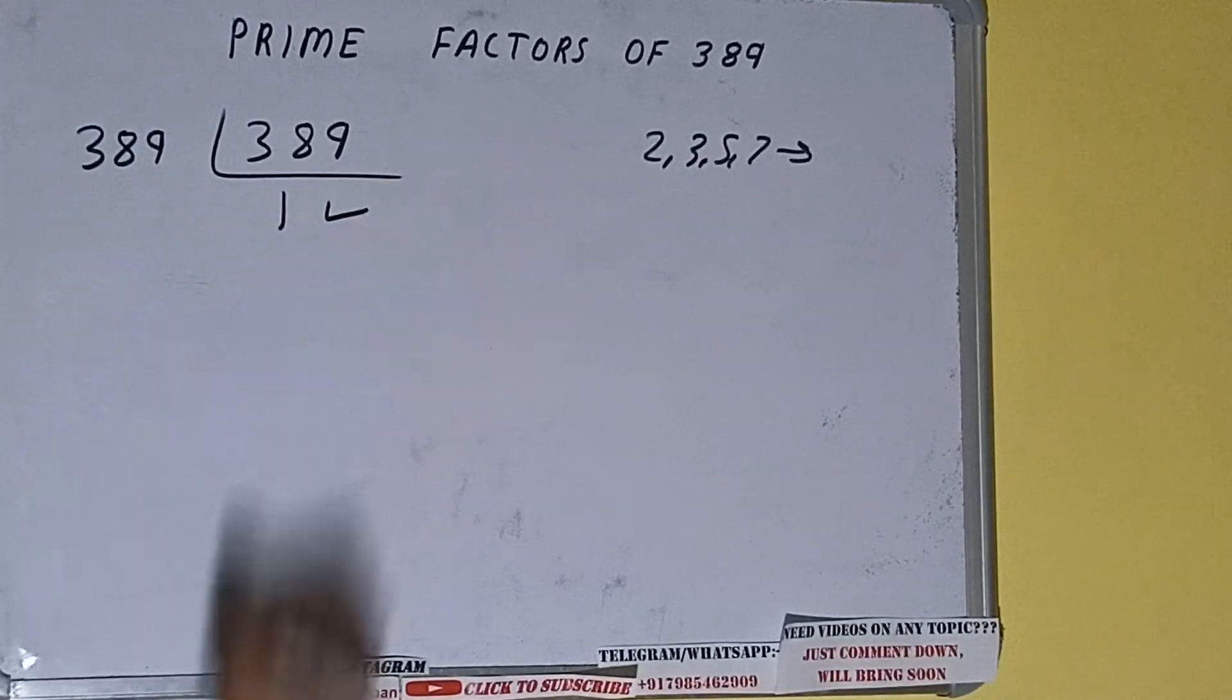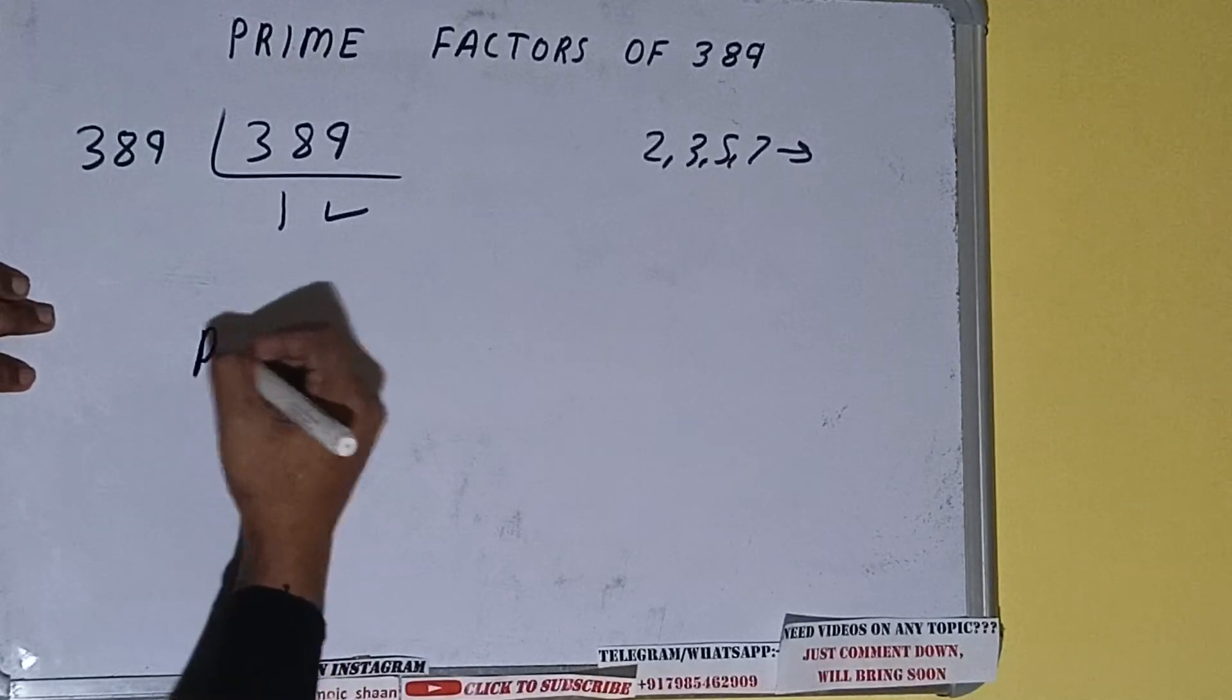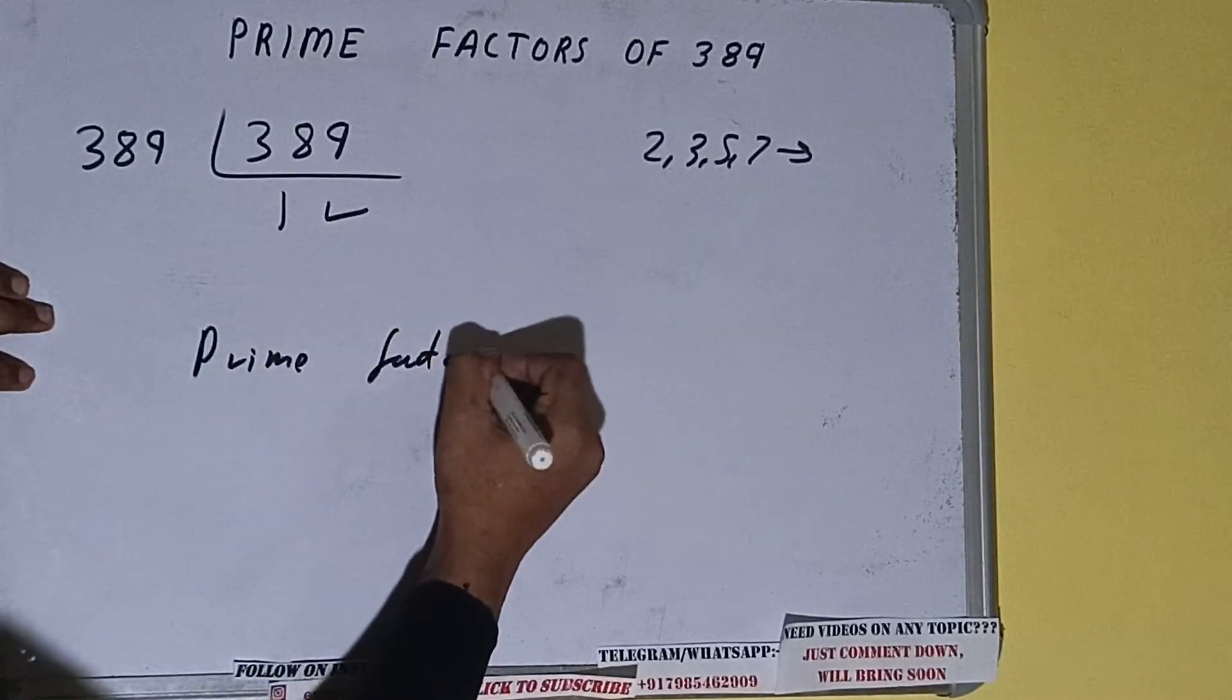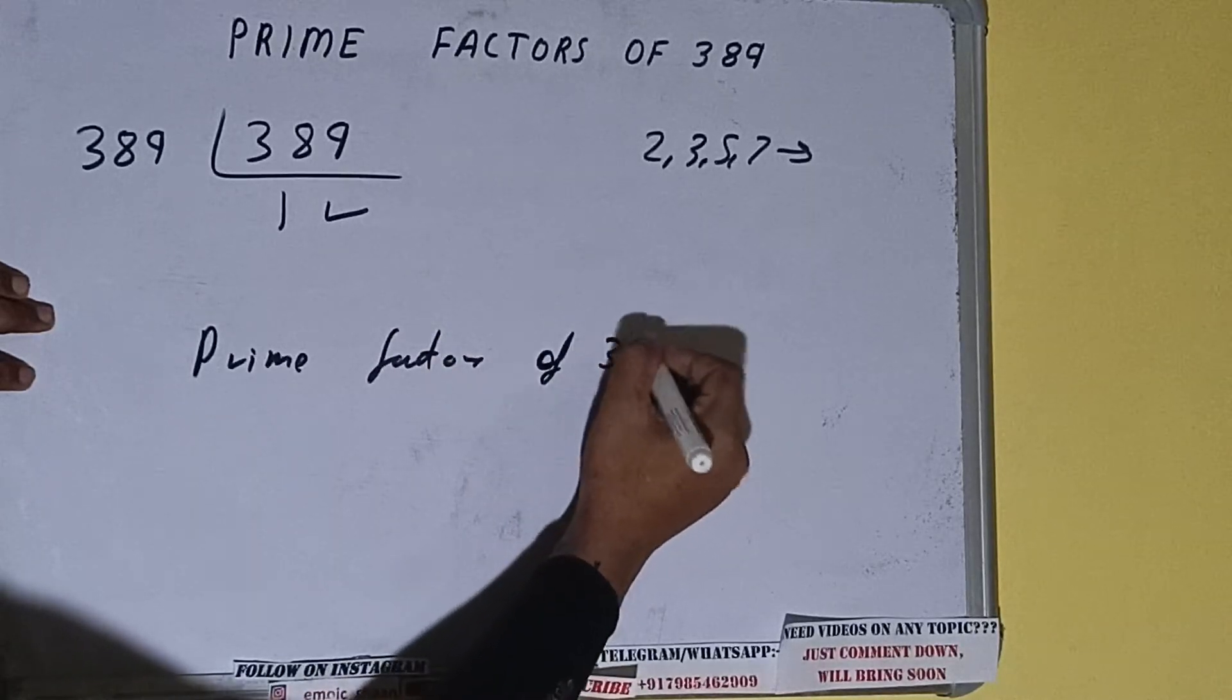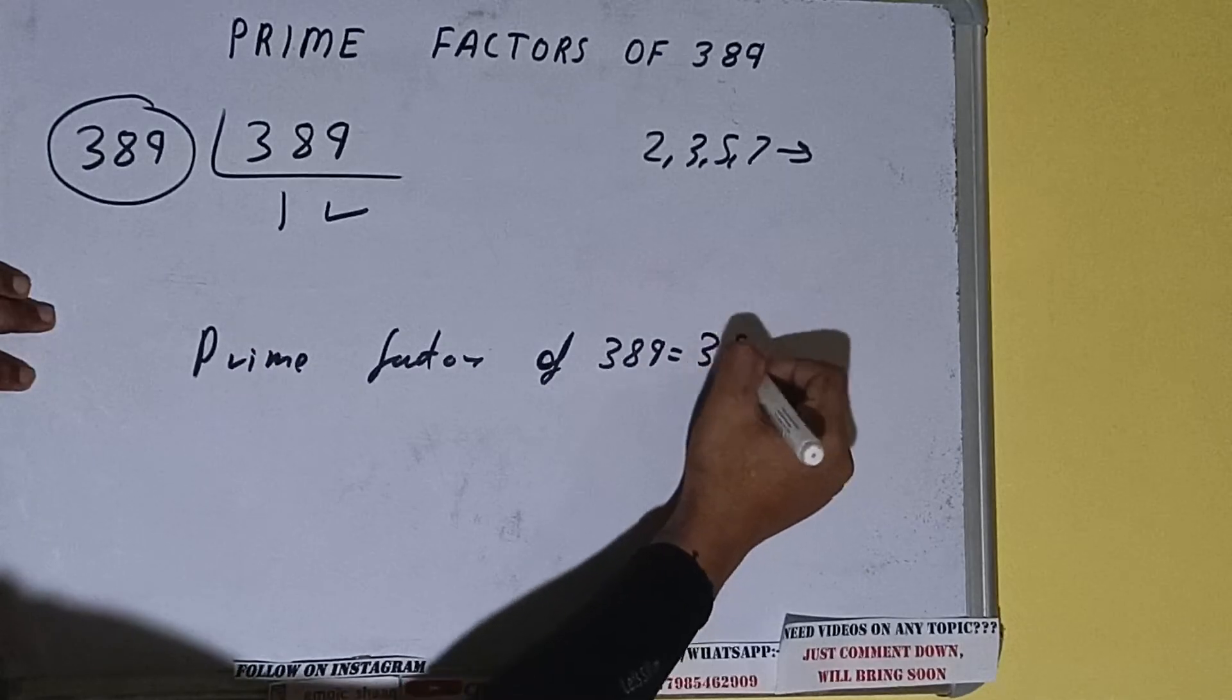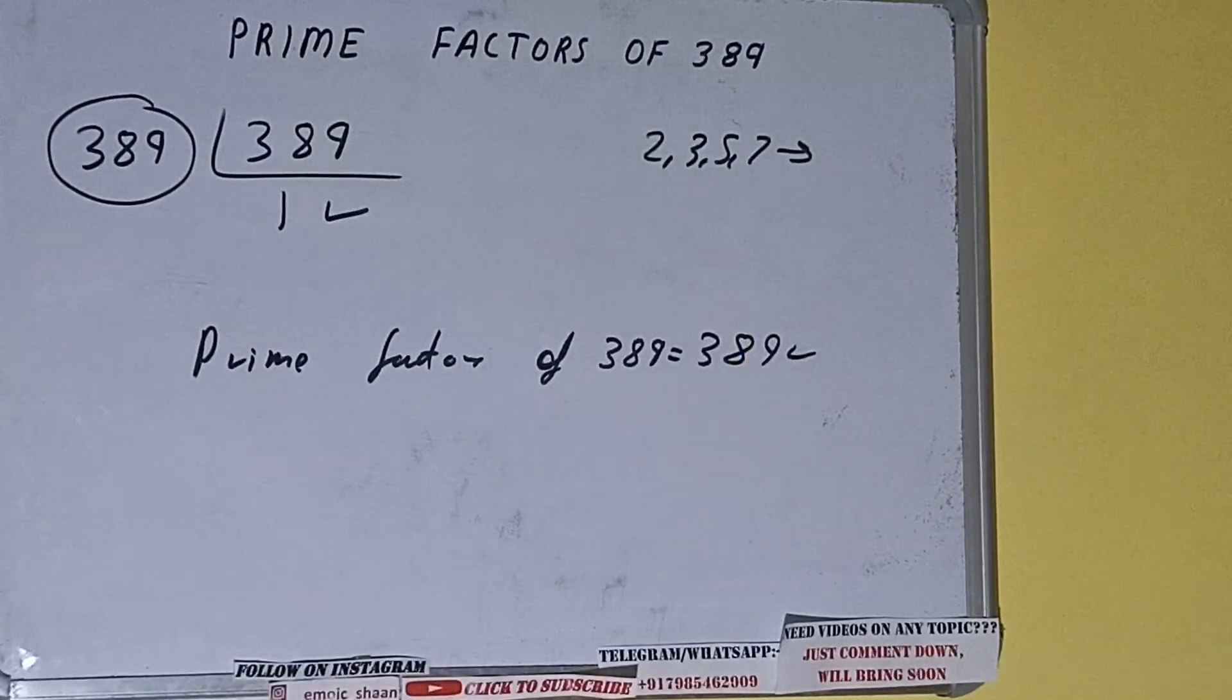Once we get 1 we need to stop. The prime factors of 389 will be whatever we have on the left hand side, that is 389. That will be the answer.